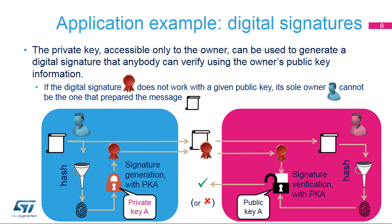Person A can prepare a signed message by first performing a secure hashing function on it, then encrypting the resulting digest using his private key. The resulting signature is sent alongside the message to person B. Person B can verify A's signed message by performing the same hashing function on it, and then using the result with the signature verification function using A's public key. The result of the verification function will determine if the message is genuine or not.